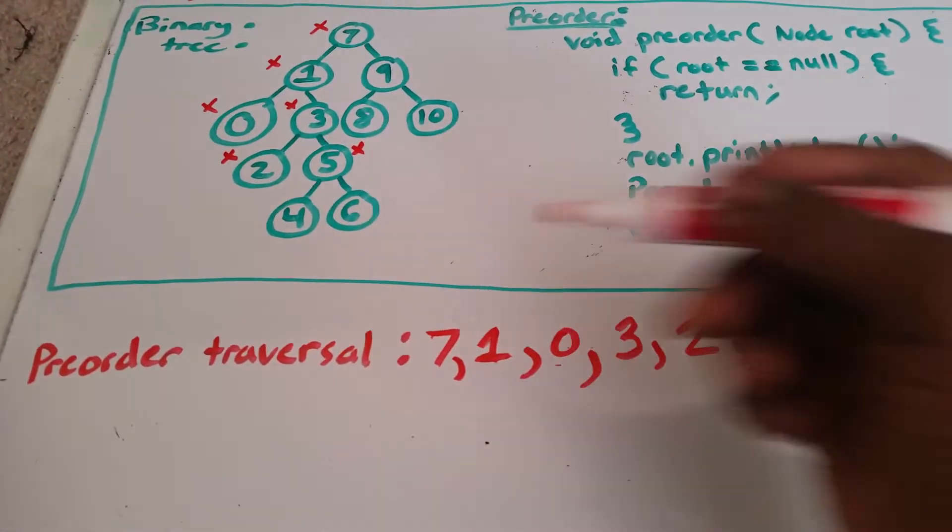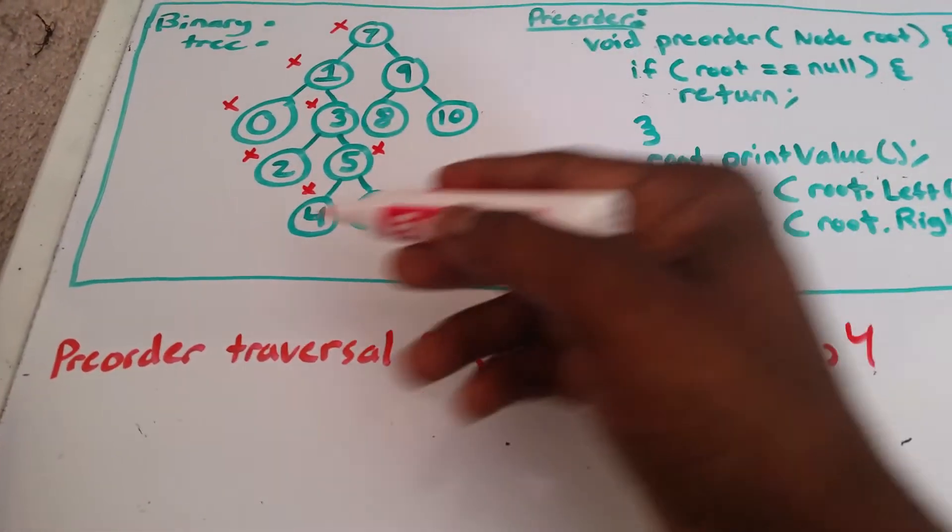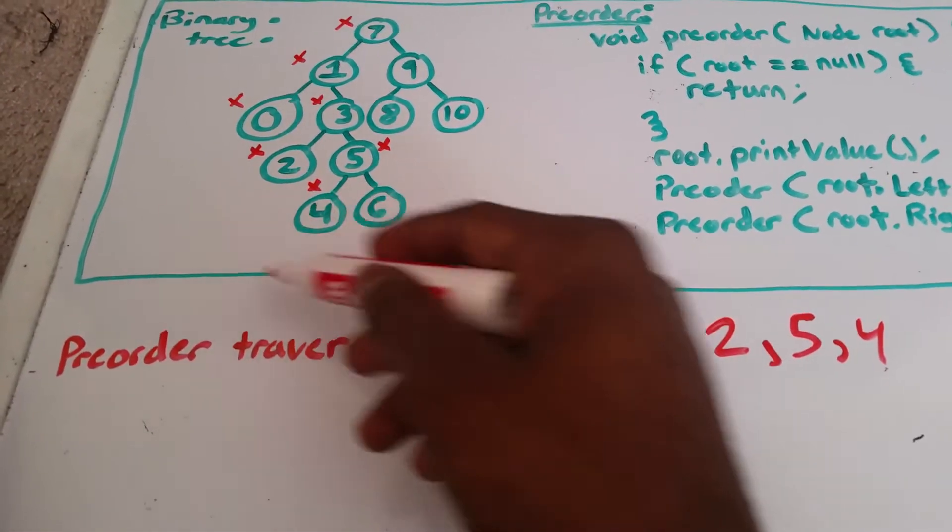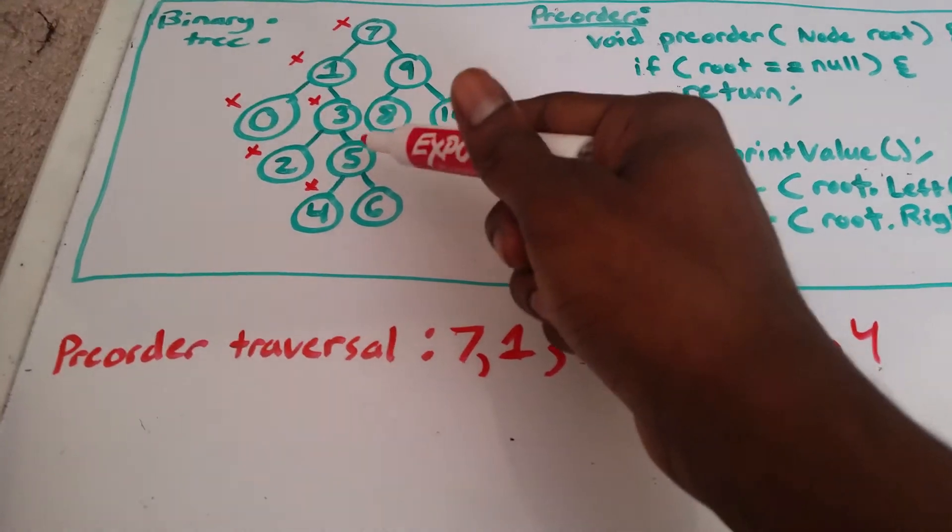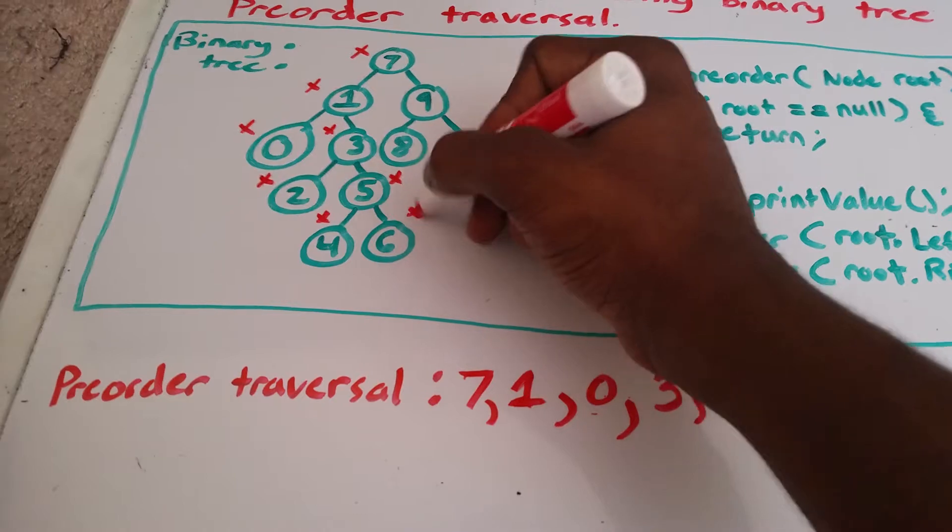And then we go to the left of 5. We're going to print it as 4. Mark it off. 4 doesn't have any children. Go back to 5. Now we need to go to the right of 5, which is 6. And we're going to mark it off.